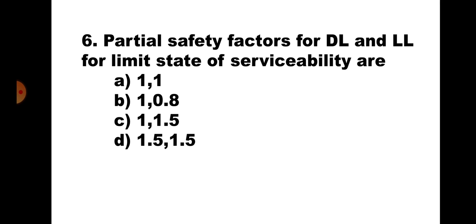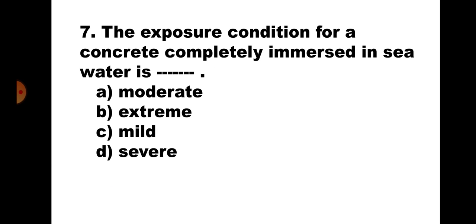Question number six: Partial safety factors for dead load and live load for the limit state of serviceability are — (a) 1, 1, (b) 1.8, (c) 1, 1.5, (d) 1.5, 1.5. For the limit state of serviceability, dead load and live load partial factors of safety are taken as one and one, since we are working at working loads for deflection and cracking checks. The correct answer is (a) 1, 1.